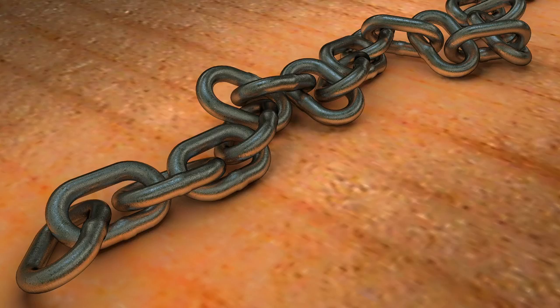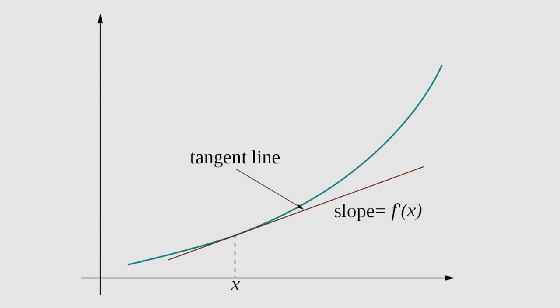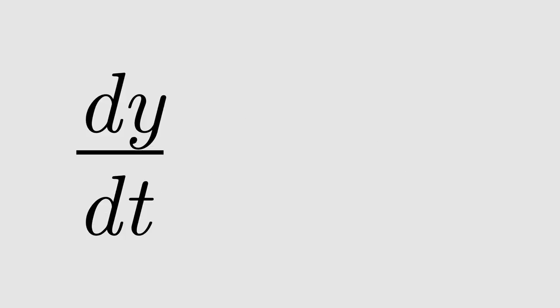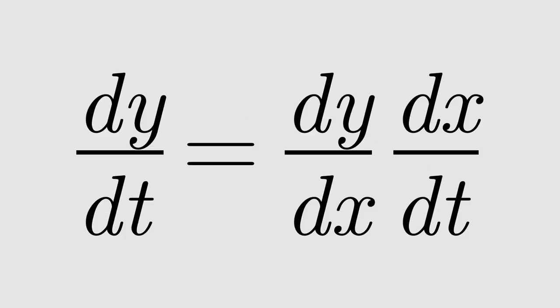Rather, the chain rule has to do with calculus. Roughly speaking, if y depends on x and x depends on t, then this rate of change is equal to the product of these two rates of change.